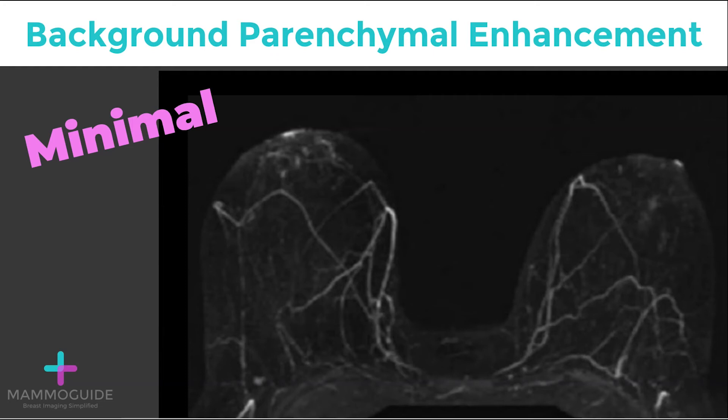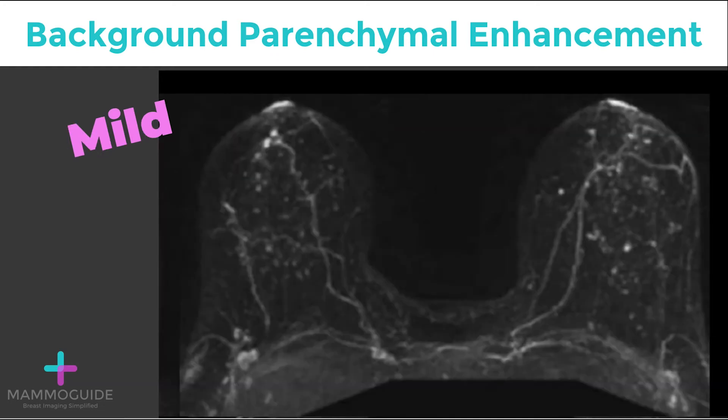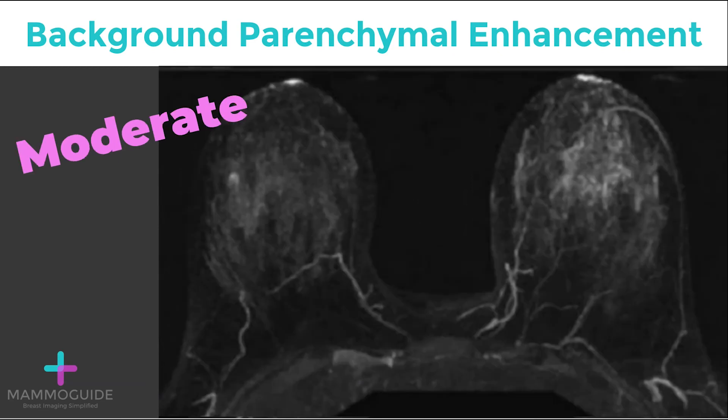The first category is minimal — less than 25% of the breast lights up. The next is mild — 25% to 50% of the breast lights up. This can be diffuse or stippled enhancement throughout the breast, such as in this case.